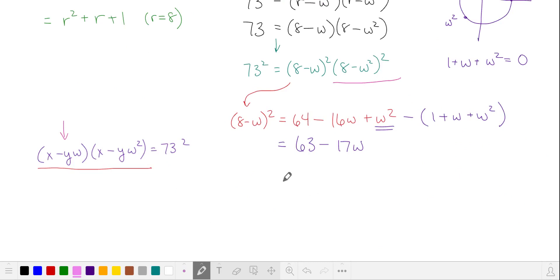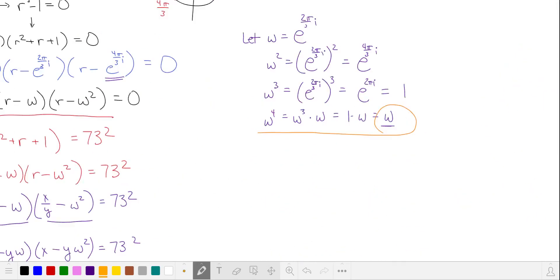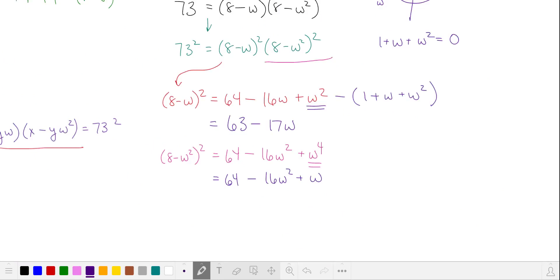Let's expand the square of the second factor. That's the square of 8 minus ω². We note that this ω to the fourth power is the same thing as ω, so we'll make that substitution. And we can get rid of ω by subtracting 1 plus ω plus ω² again, and we get this expression which resembles the second factor.